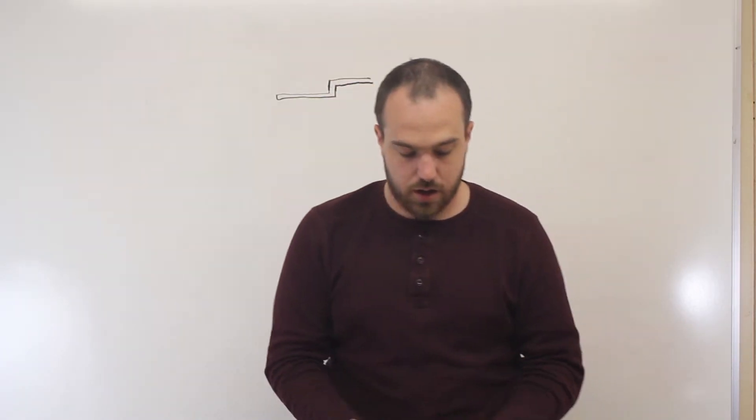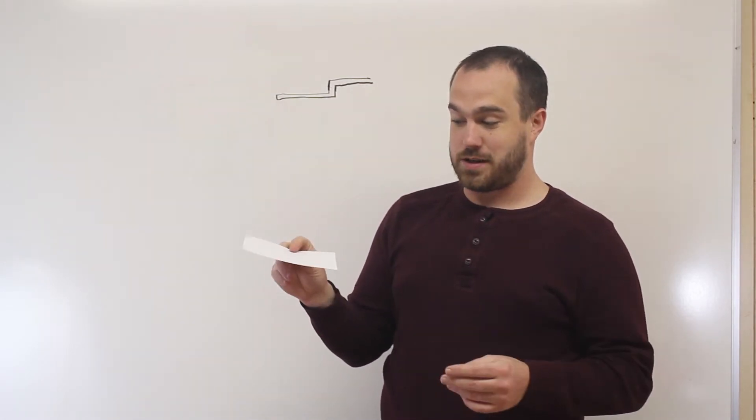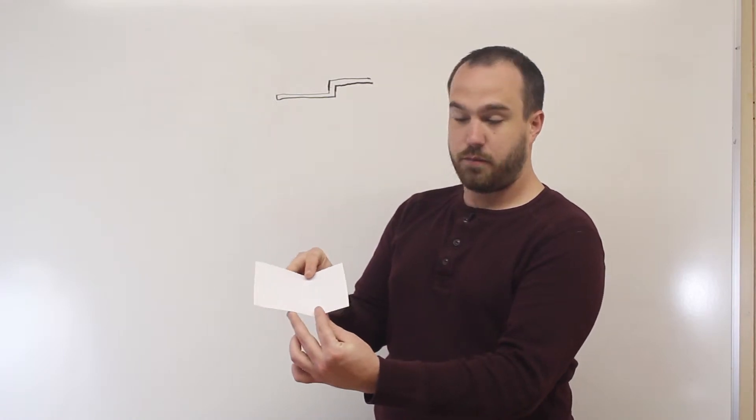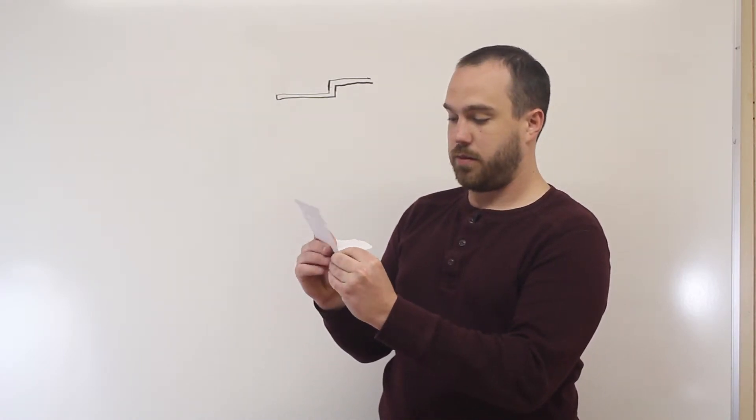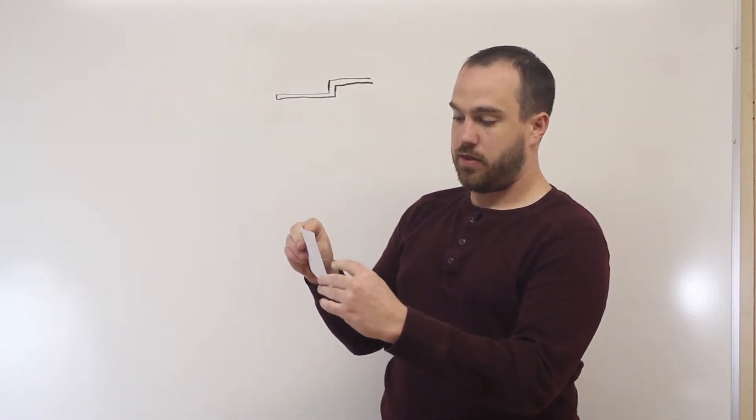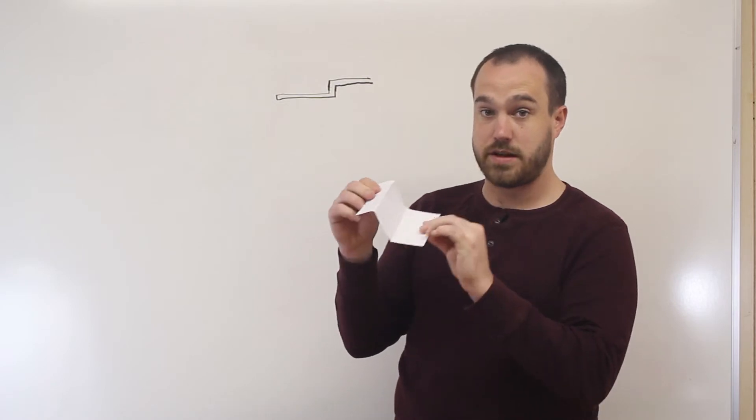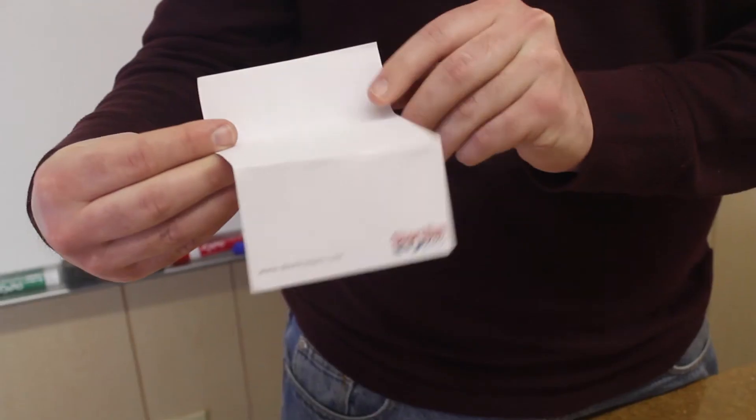Correspondingly, if I wanted to make a Z bracket with this, I can grab hold of both sides of the paper. If I grab here and then I grab up here, there's in both cases plenty of room for me to grab hold of the material on both sides of the bend, which is what makes that a lot easier.